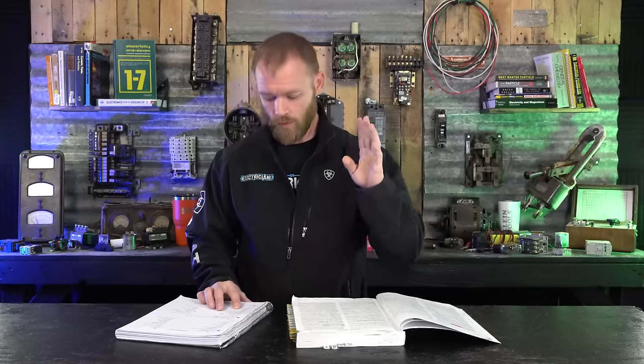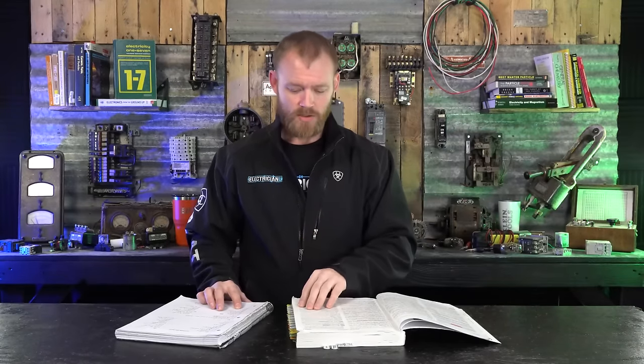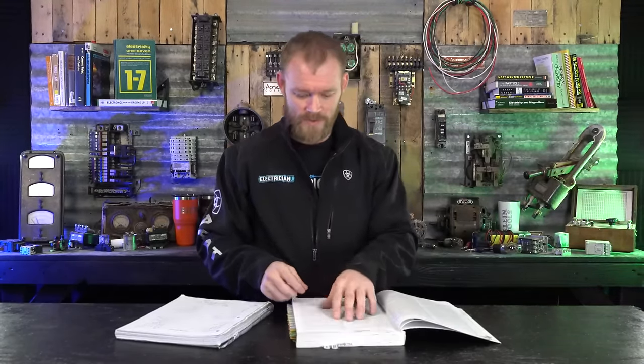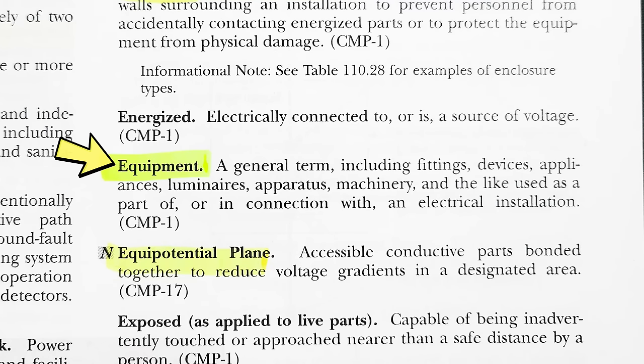Now the next three things that we're going to talk about all kind of go together. We're going to talk about appliances, equipment, and devices. So a lot of times people will call something an appliance, but it's not actually an appliance, it's a device, or they'll say this equipment is blah, blah, blah. Well, is equipment an appliance or are appliances only specific things? And what is considered a device? Is it just a receptacle or is it something that's electric? So we have to kind of parse through those. So the first one that we're going to look at is equipment. Equipment by code is a general term, including fittings, devices, appliances, luminaries, apparatus, machinery, and the like used as a part of, or in connection with an electrical installation.